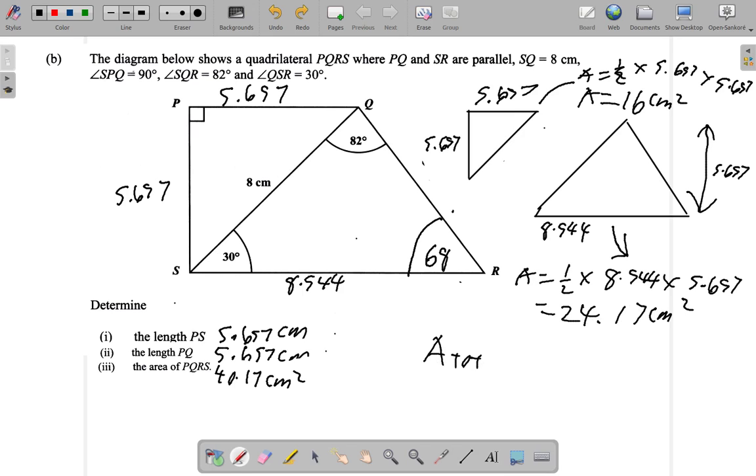So the total area when you add up everything is 24.17 plus 16.00, which equals 40.17. So in that case it doesn't really matter which method you use, you get the same answer.